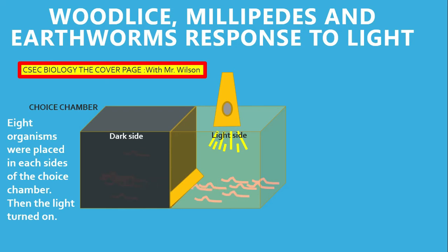We are looking at the response of wood lice, millipedes, and earthworms to light. We used eight organisms on each side of the choice chamber, and then the light was turned on. The diagram on screen is that of a choice chamber, and it has a dark side and a well-lit side.